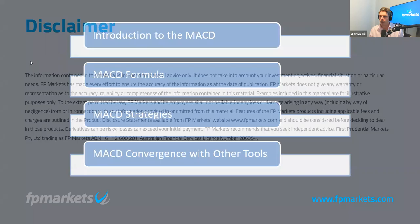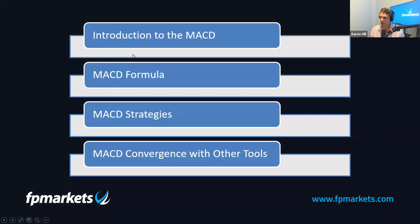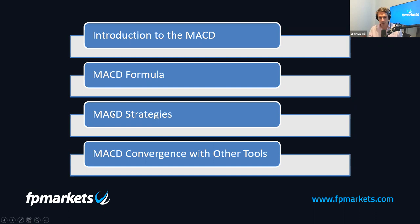In terms of topics, we're going to first introduce the MACD — show the structure of the indicator and label what the components are. Then we'll look at the MACD formula, which is far easier to calculate and understand than most momentum-based indicators. We'll then go over some MACD strategies and also look at MACD convergence with other tools. This is the important part for me, as I never use the MACD as a standalone indicator — I never take the MACD in isolation to generate a trading decision.